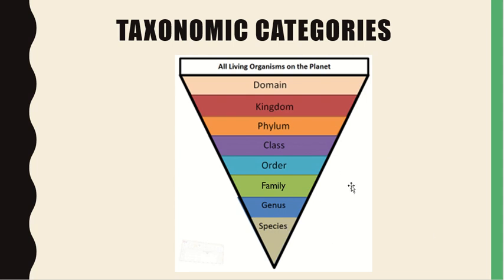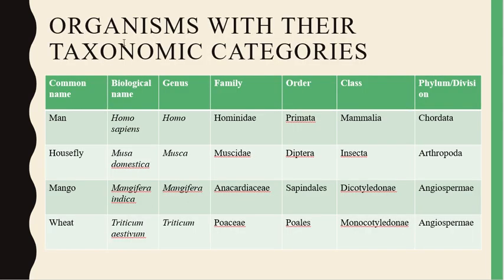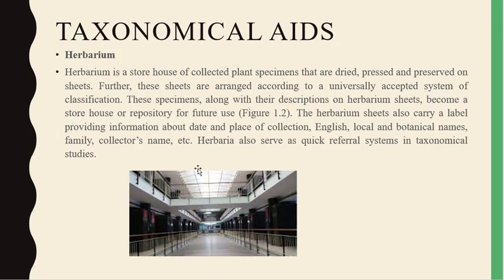There are examples of organisms fitted into taxonomic categories of man, housefly, mango, and wheat. What are taxonomical aids? Taxonomical aids are the samples or collections of preserved organisms that help in the research of taxonomic hierarchy. Examples include herbarium, monograph, museum, zoological park, flora, and more.